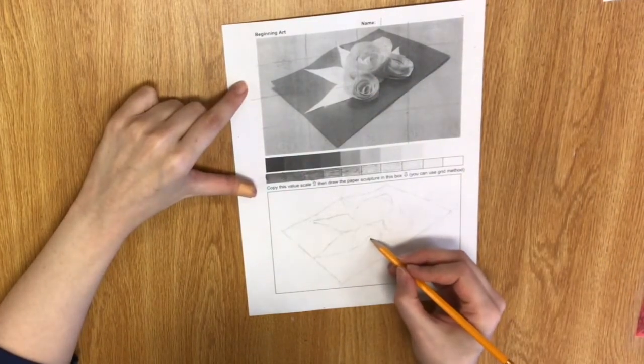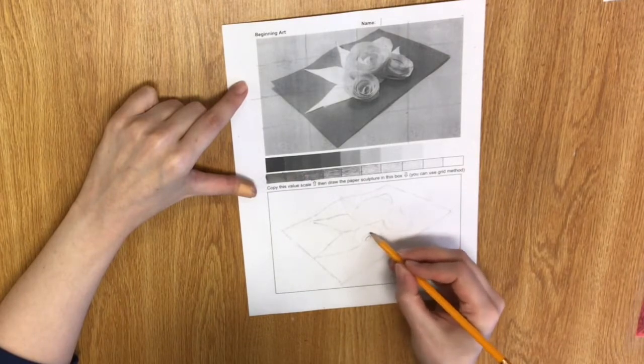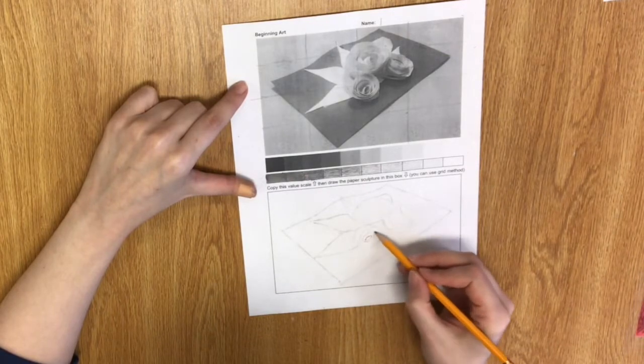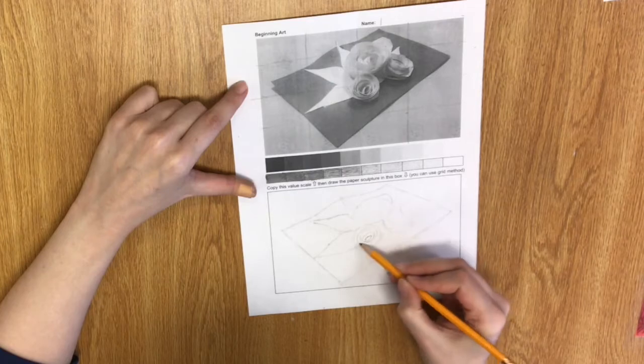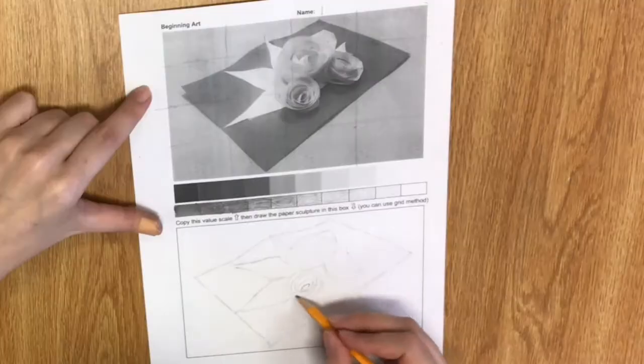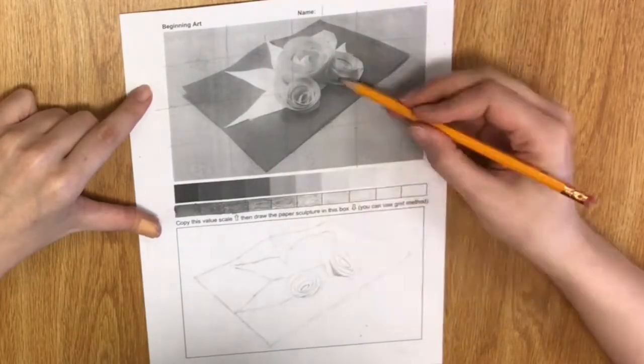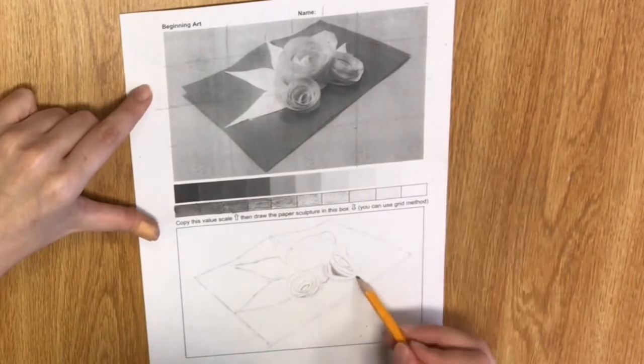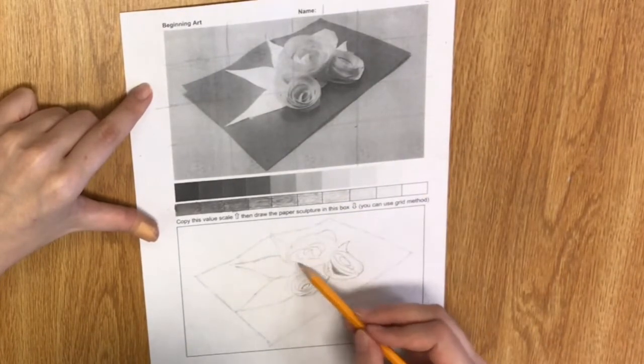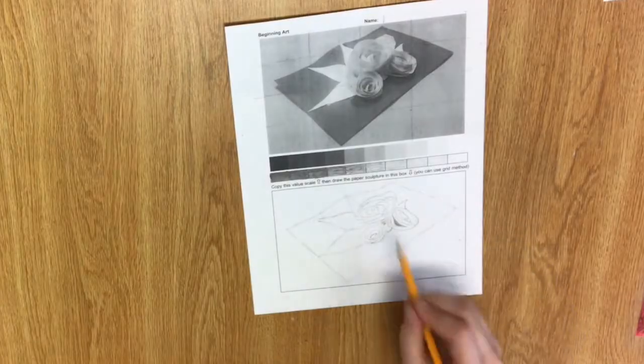I'm going to start in on more of the details of the flowers. I see a little oval here. I think it's a little bigger. A little bigger. Really, it's just a bunch of lines. So, now I have my details.